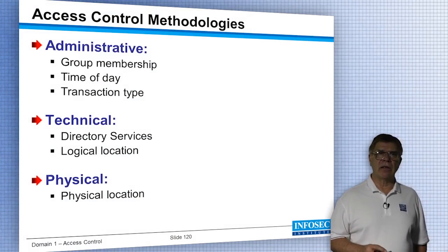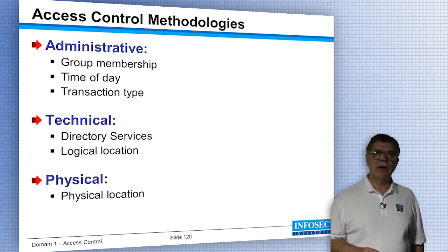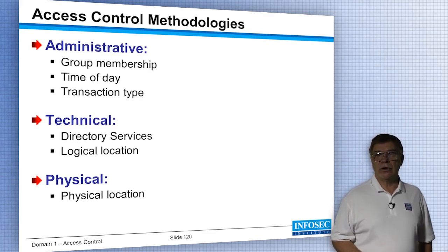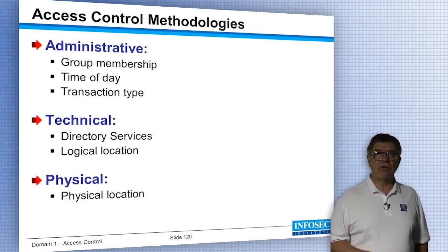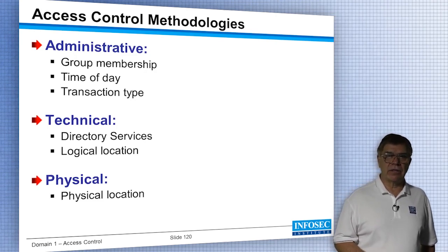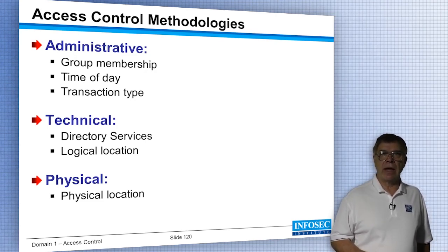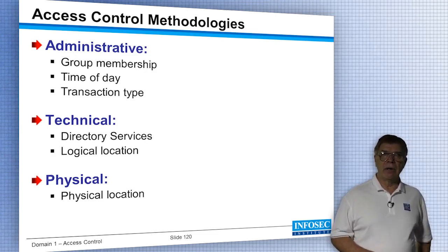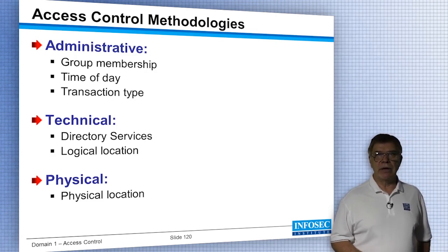The methodologies for access control are administrative, technical, and physical. For administrative methodologies: group membership, time of day, and transaction type. From an administrative perspective, you can restrict access based on time of day — for example, payroll files are not accessed Sunday morning at 3 a.m. Or by transaction type — you're not allowed to perform a transaction equivalent to deleting a database table.